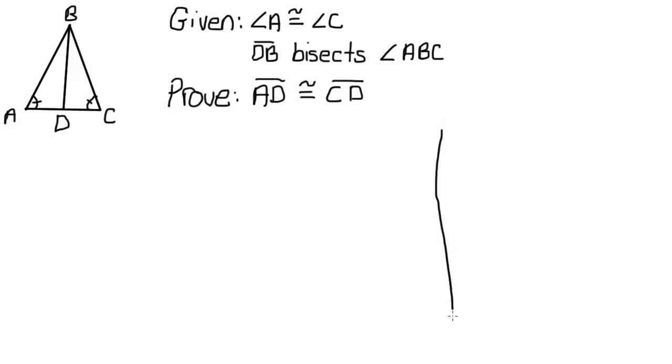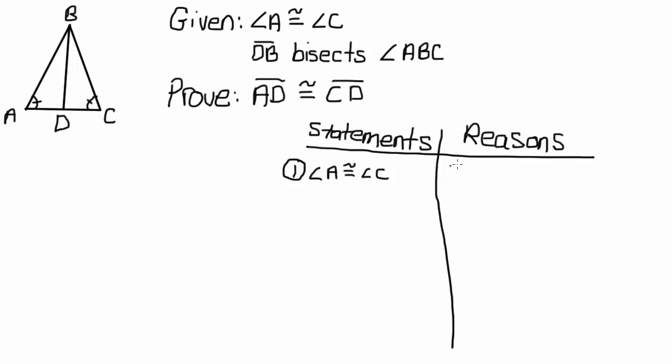So as you know, we've got the statements on one side and our reasons on the other. The first thing that I've always told you to do is write your givens. So our first statement is going to be that angle A is congruent to angle C, and the reason for that is that it is given to us.